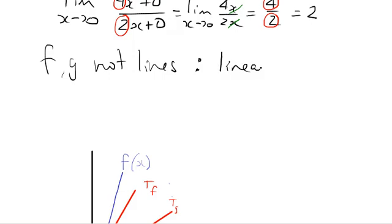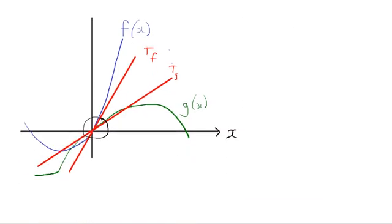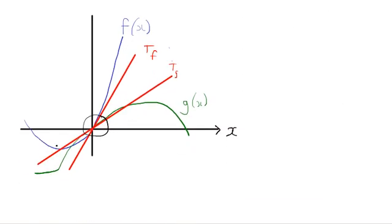Well, we can if we use linear approximation. So I've drawn a little sketch here. Here's a function f that's curved and a function g that's curved. They both pass through the origin because I want the limit as x goes to 0 of f(x) to be 0, and I want g(0) to be 0 as well. Then I'll have a 0 over 0 form in my limit.